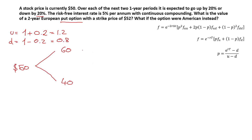Because this is a two-year European put option, we go one more period. Going up from $60: 60 × 1.2 = $72. The middle node can be reached two ways — 60 × 0.8 or 40 × 1.2 — both giving $48. And finally, 40 × 0.8 = $32.